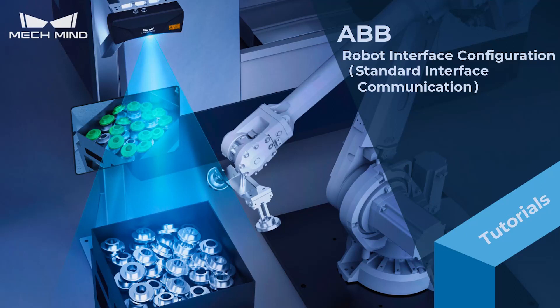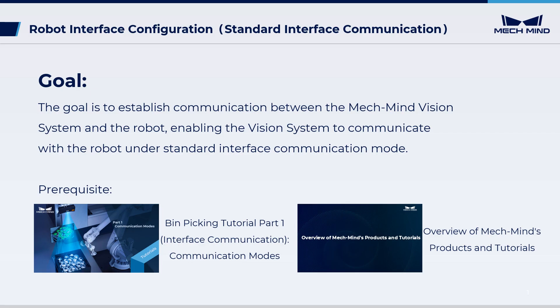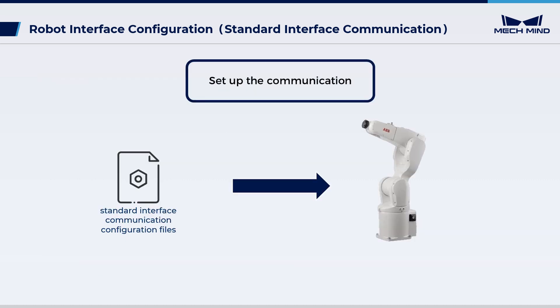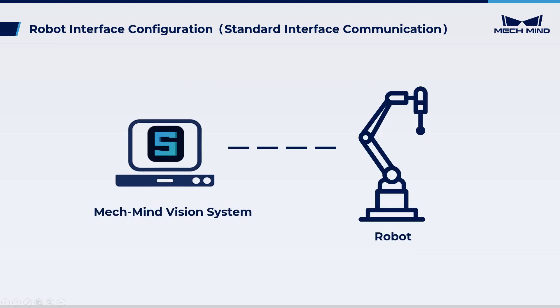This video demonstrates how to set up standard interface communication on an ABB robot, a process we call loading. Loading involves importing robot programs and configuration files into the robot system to establish communication between the vision system and the robot.